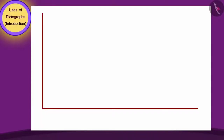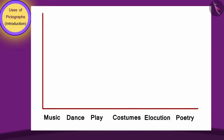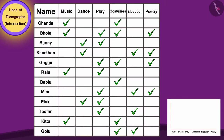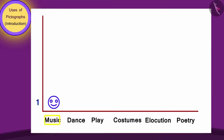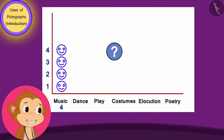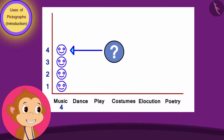See, I have written the names of the programs on a horizontal line. Then I counted the symbols made under the singing program in your table and drew an equal number of faces on top of the singing program in my pictograph. But what are these faces, Appu?